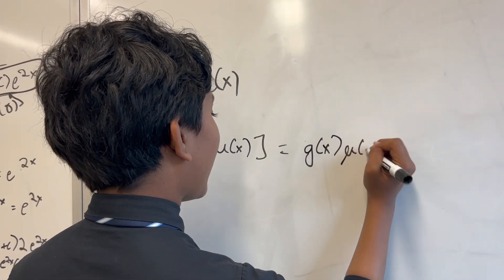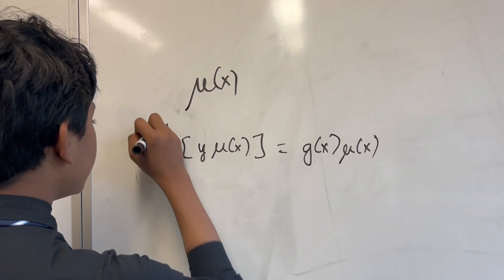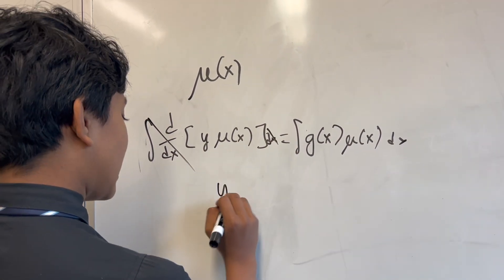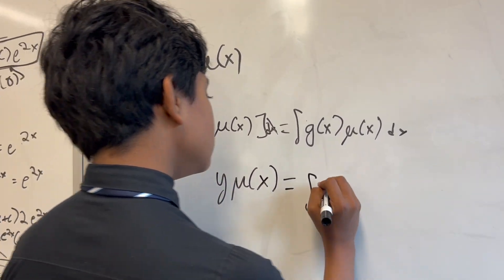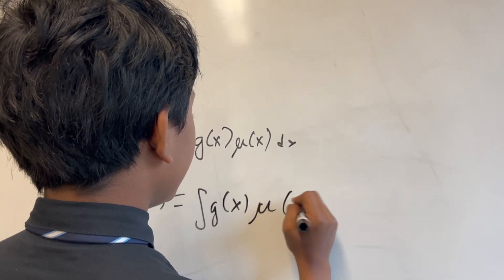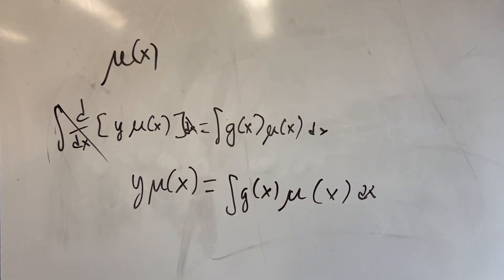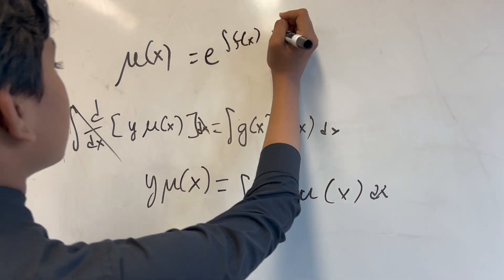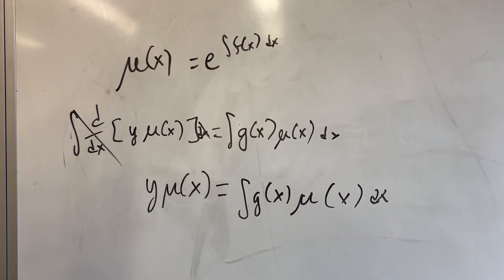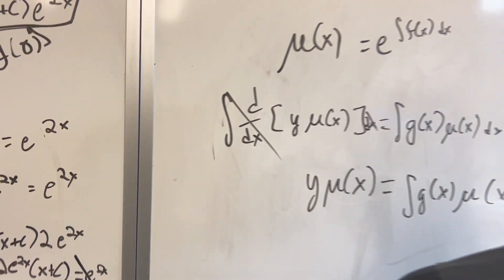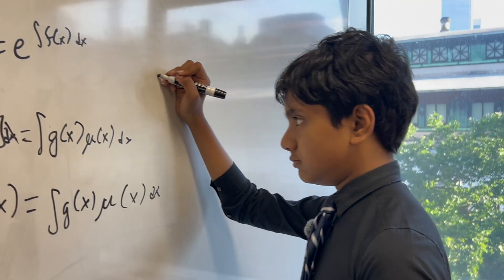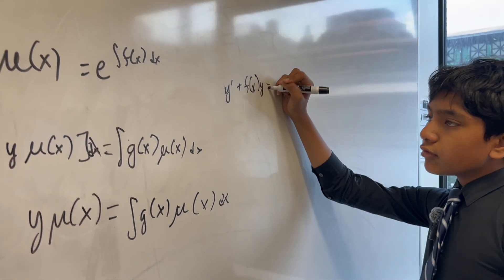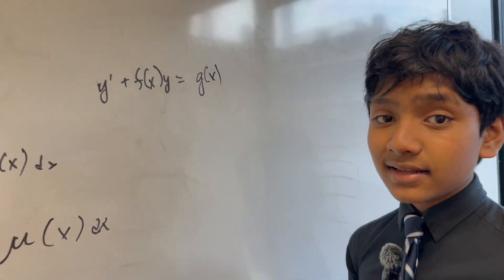So that's the integration factor in first-order differential equations. Just to review: the integration factor is an intermediate step we use so that we can convert what's on the left-hand side of our first-order linear differential equation into just a product rule derivative. Then all we do is integrate, so that these two cancel out by the fundamental theorem of calculus, and all you have to do is solve from there. The formula for mu(x) is simply e to the integral of f(x) dx, and the general standard form is y prime plus f(x)·y equals g(x). Thank you everybody for watching.